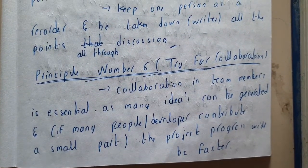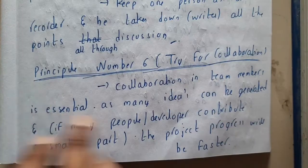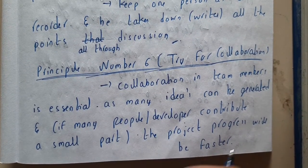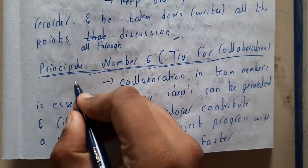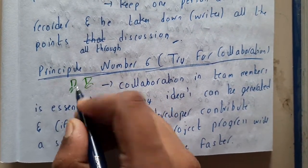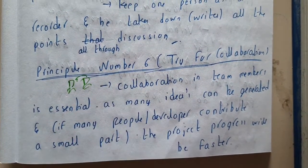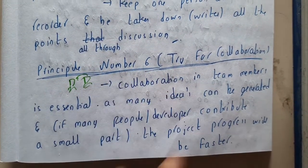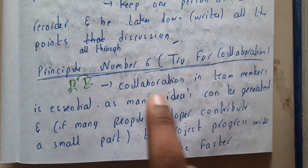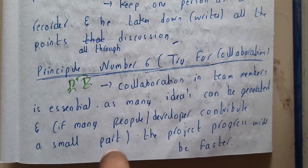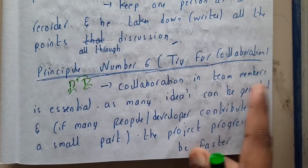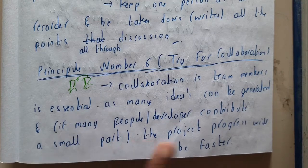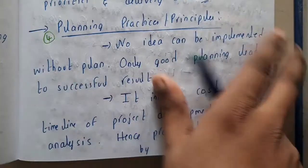Principle six is to try for collaboration. If you are doing a large project and your team is not efficient at collecting requirements, you can collaborate with another company — a medium or large-scale MNC — make a deal, and jointly gather requirements and build the project together. Collaboration within teams in the same company or across multiple companies is essential, as more ideas can be generated and progress is faster when many developers handle smaller parts.